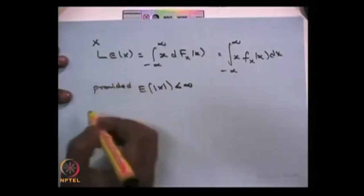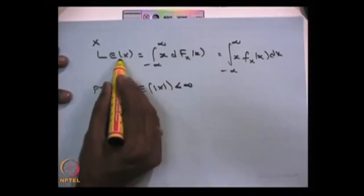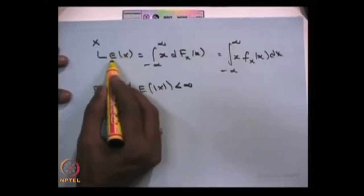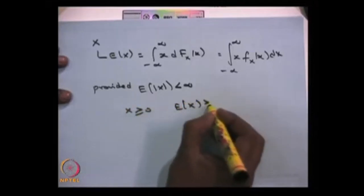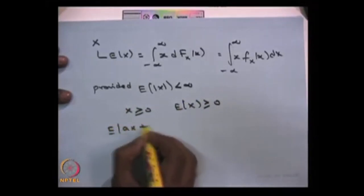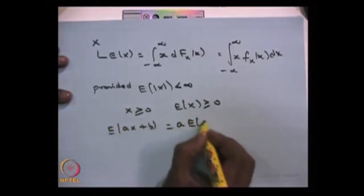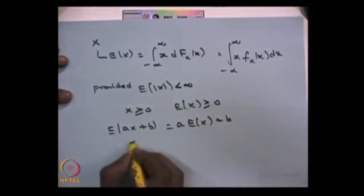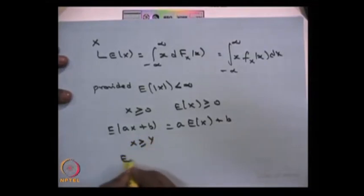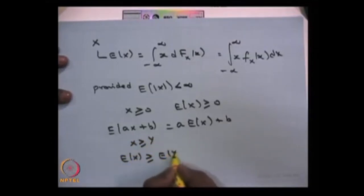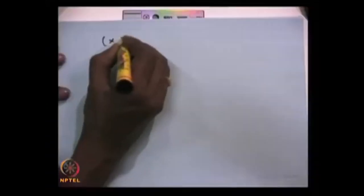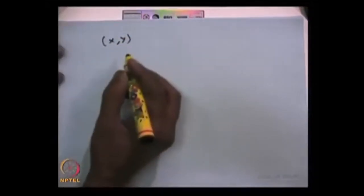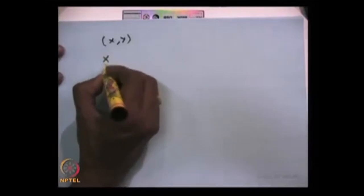The expectation of the random variable has a few properties: it is always a constant, not a random variable. If the random variable X is greater than or equal to 0, then the expectation of X is always greater than or equal to 0. The expectation also has a linear property. If you have two random variables and X ≥ Y, then the expectation of X is greater than or equal to the expectation of Y.